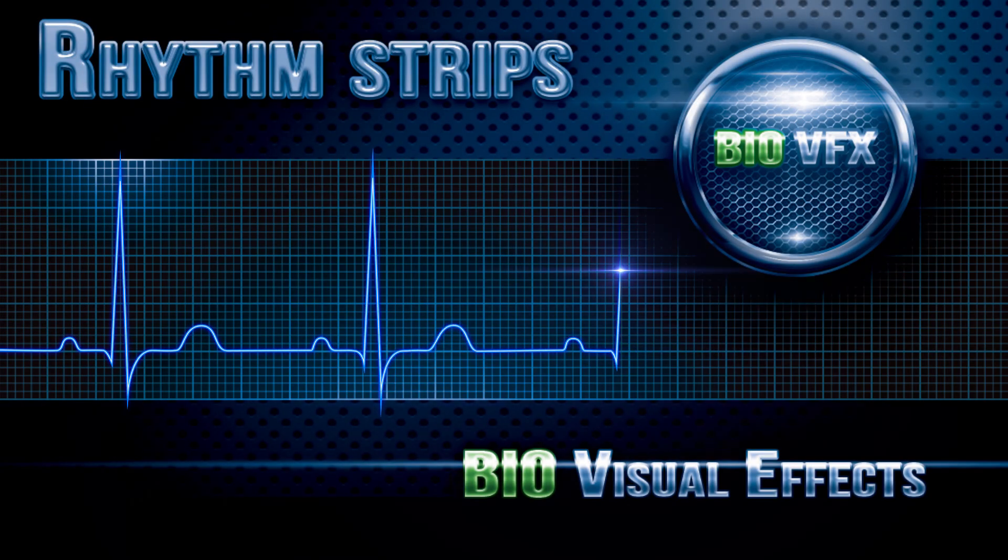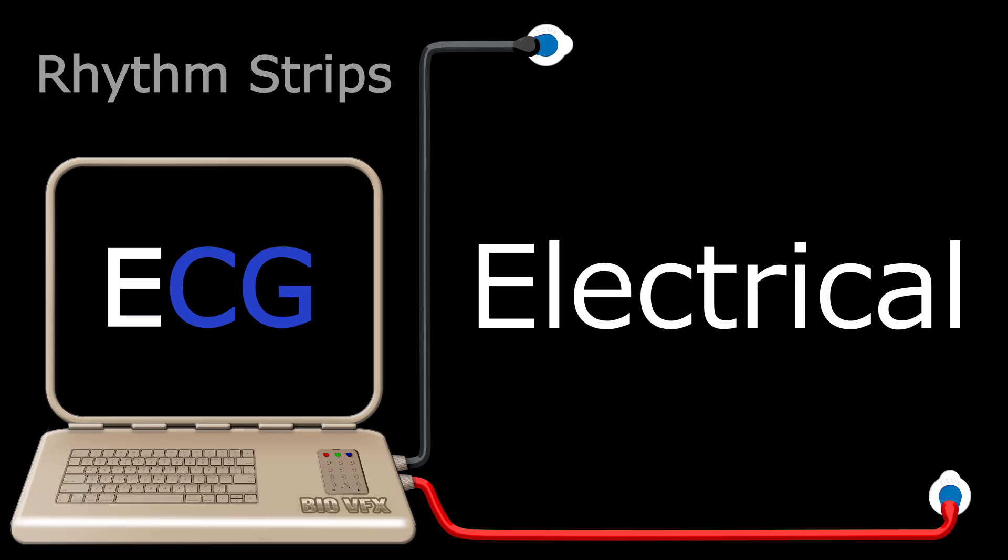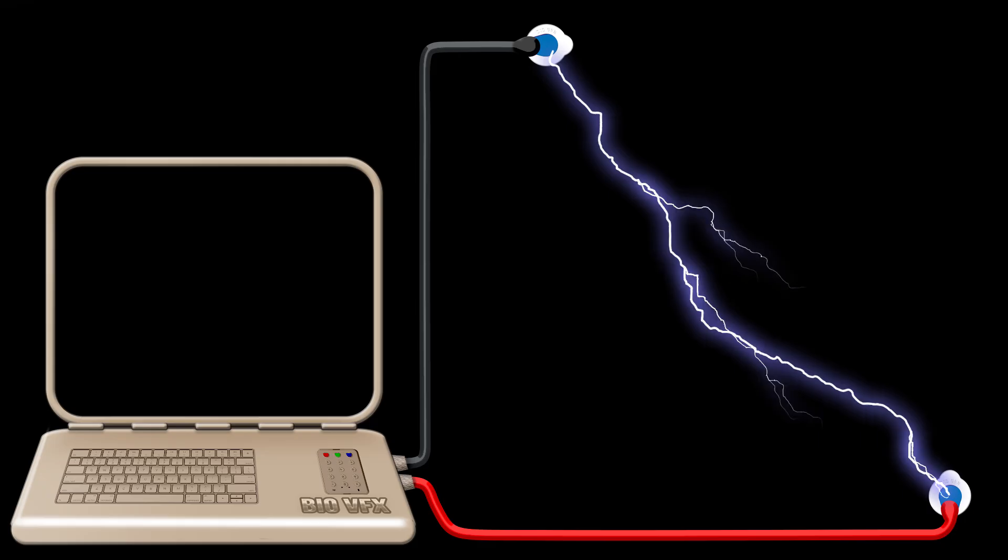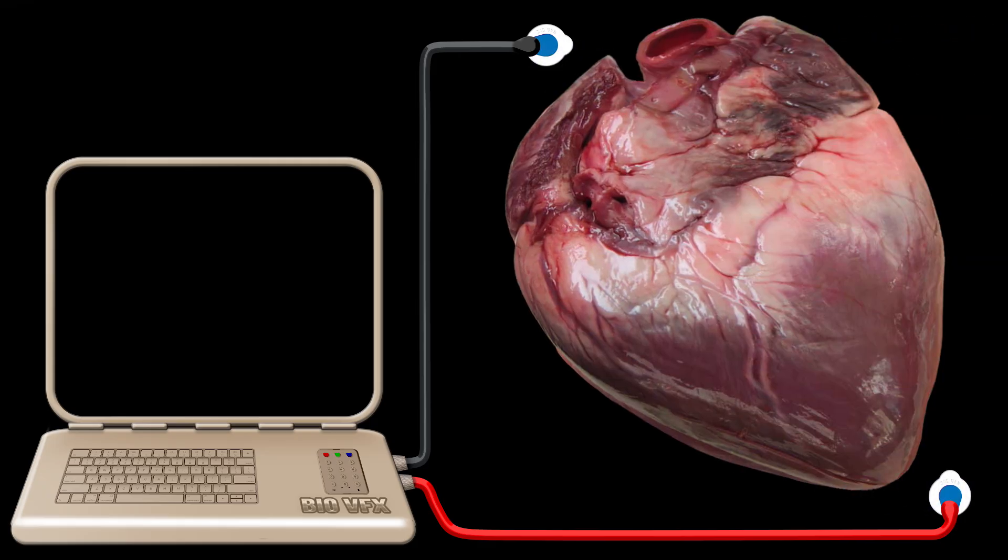Understanding Rhythm Strips. EKG or ECG both stand for electrical, cardio, graph. Let's break this word down. Electrical current moving from one area to another. Cardio, referring to the heart.